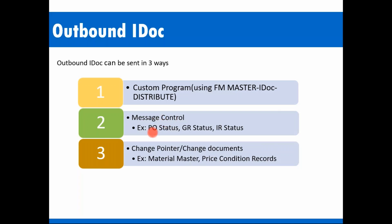With message control, wherever there is an output type, we generate an IDoc and send it to the third-party system. With change pointers, you can activate them for specific material types and plants. Popular examples for change pointers include price condition records maintained in MK01, material master, info records, and vendor master — these are all master data objects that don't have an output type.